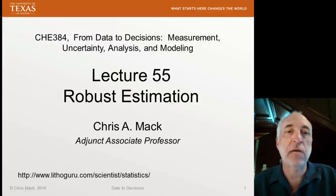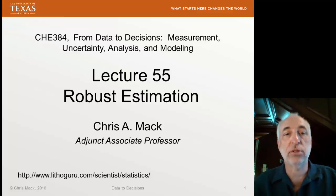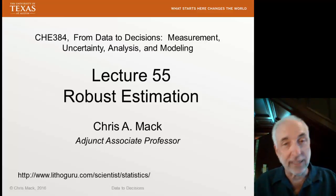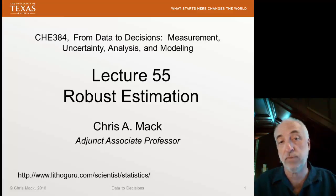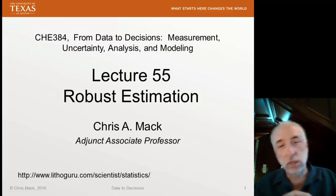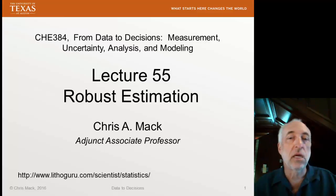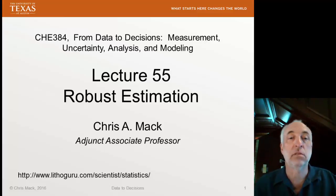Hello and welcome to Lecture 55 of my course, From Data to Decisions. I'm Chris Mack, and this lecture is on the topic of robust estimation. In previous lectures, particularly when we were talking about outliers and how to identify and handle them, I mentioned robust estimation and robust regression as an alternative to identifying outliers in a more manual way. In the next two lectures, we'll talk about robustness. In this first lecture, we're going to talk about estimation of location and scale in particular. Next time, we'll talk about robust regression, and then we'll look at how to do some of these things in R.